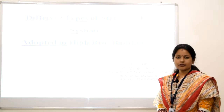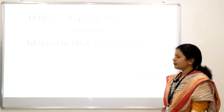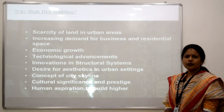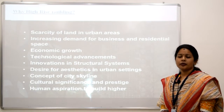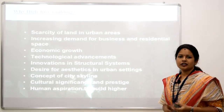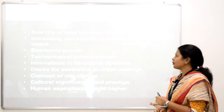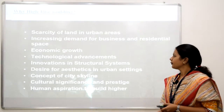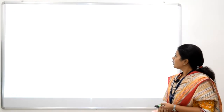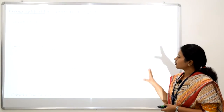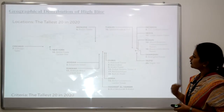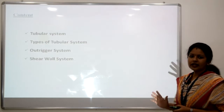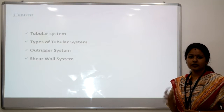Today my topic is different types of structural systems adopted in tall structures. Why do we go for tall structures? We go for tall structures because of the occupation of land — all the agricultural lands are getting occupied and because of scarcity of land in urban areas. You can find different types of tall structures built across the world.